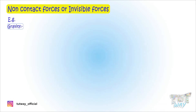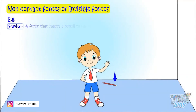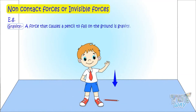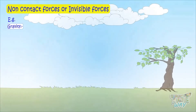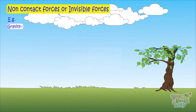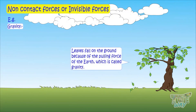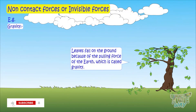Examples — gravity. A force that causes a pencil to fall on the ground is gravity. It is the pull of the earth that causes the pencil to fall on the ground. Leaves fall from the tree to the ground — why? Because there is a pull from the earth.